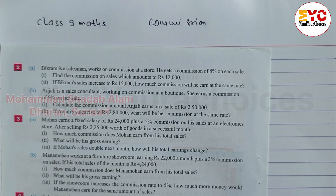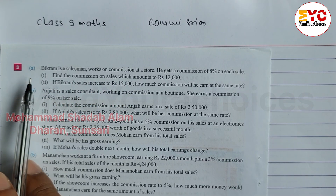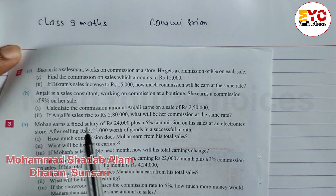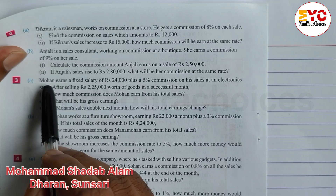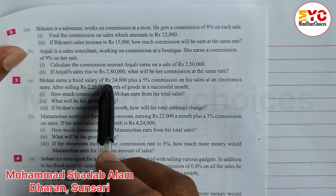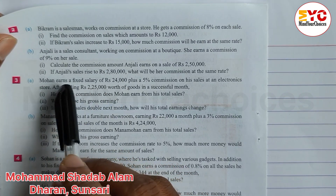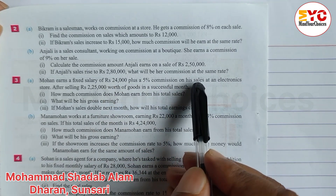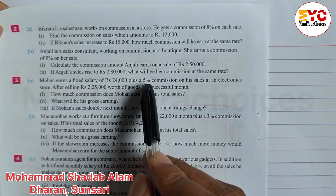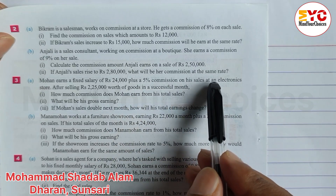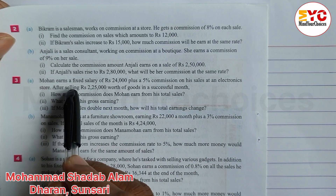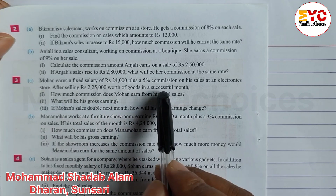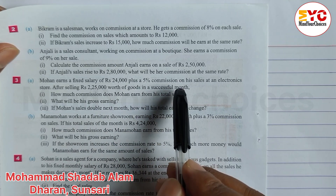Hello everyone. So you can see here in question number 3. Mohan earns a fixed salary of Rs. 24,000. Mohan's salary is 24,000 per month plus 5% commission on his sales at an electronic store. After selling Rs. 2,25,000 worth of goods in a month.